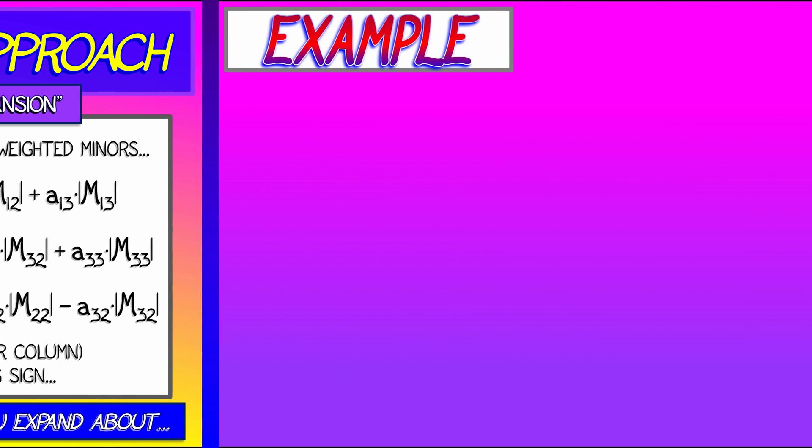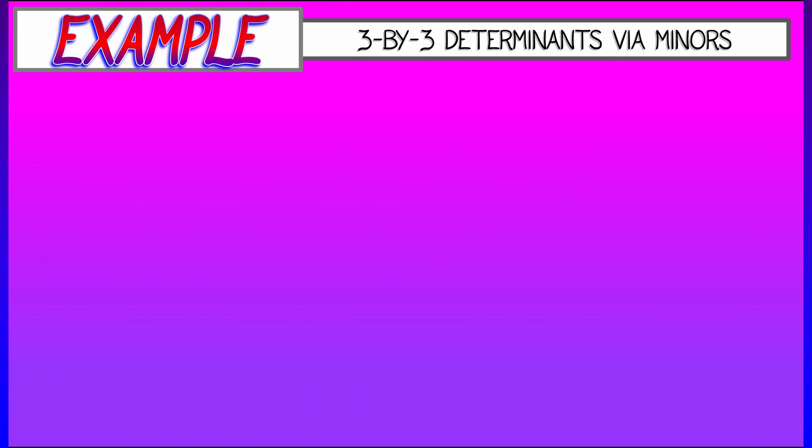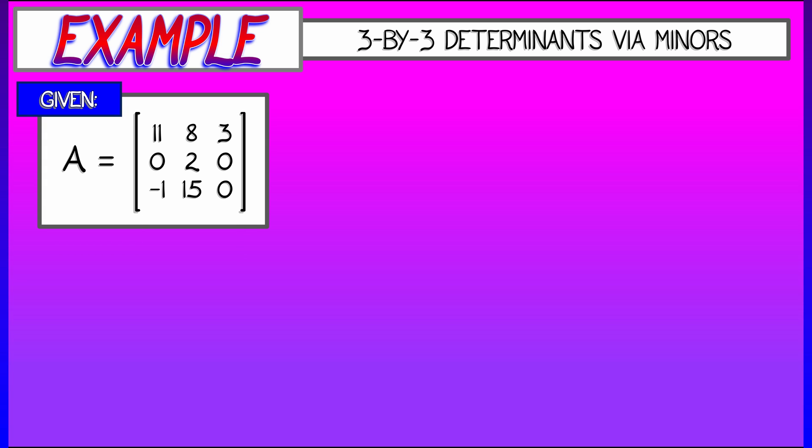Well, in theory, it doesn't matter. In practice, let's see what happens in the following example of a three by three determinant. Let's say A is 11, 8, 3, 0, 2, 0, negative 1, 15, 0.